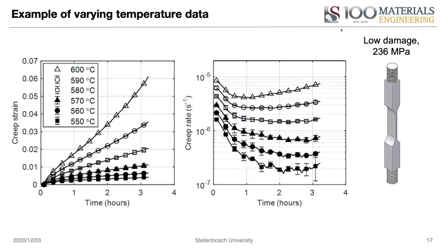In terms of damage qualification: we termed low damage material as that which had measured between 60 to 90 creep cavities per millimeter squared, exposed to 545 degrees Celsius at pressures of 17 megapascals for 130,000 hours. Medium damage had 200 cavities per millimeter squared, exposed to the same temperature at 19.4 megapascals for also 130,000 hours. High damage material had 220 to 690 cavities per millimeter squared, subjected to 543 degrees Celsius at 18.1 megapascals and 156,000 hours of operation.